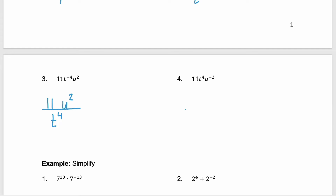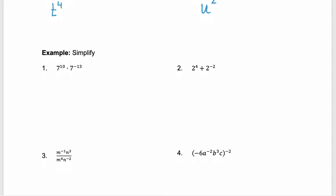Now let's look at example 4. Again, I see that I have a negative exponent, so I'm going to draw that fraction bar and then go piece by piece. 11 has no exponent attached, so it stays as 11. t to the power of 4 — it's a positive exponent, so it stays in the numerator. And then u to the power of negative 2 — the negative exponent is going to move that to the denominator and it becomes a positive exponent, giving us 11t to the 4th over u squared.